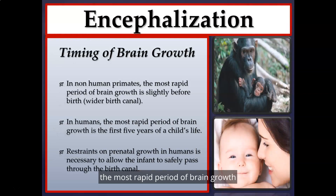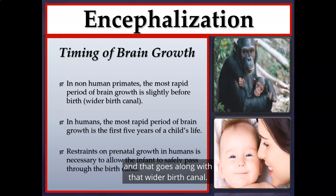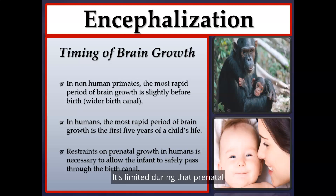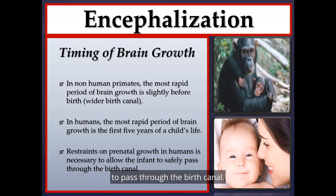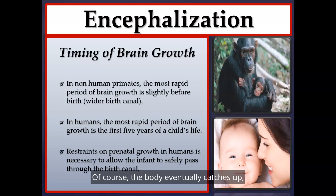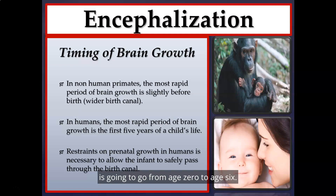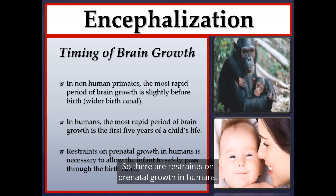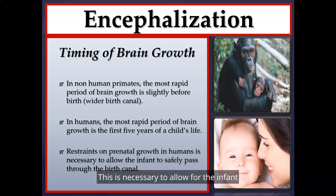In non-human primates, the most rapid period of brain growth is slightly before birth, consistent with a wider birth canal. In humans, the brain size of a developing baby is somewhat limited in utero — if the baby's head gets too large it becomes increasingly difficult to pass through the birth canal. So in humans, the most rapid period of brain growth is actually the first five years of life, which is why toddlers look top-heavy. There are restraints on prenatal brain growth in humans to allow the infant to safely pass through the birth canal.